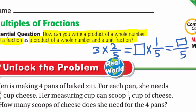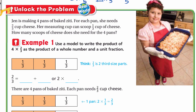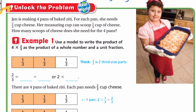To know how we'll do this, let's unlock the problem. Jen is making four pans of baked ziti. For each pan she needs two thirds cup of cheese. Her measuring cup can scoop one third cup of cheese. How many scoops of cheese does she need for the four pans?